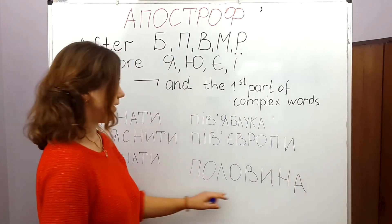The next word is Роз'яснити. And also Об'єднати — to bring something or someone together, or almost the same meaning — to join, to bring together. З'єднати or Об'єднати.